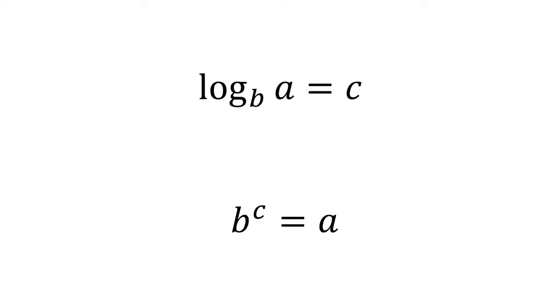A logarithm is a function with two numbers, a and b, which as a result will give us the exponent necessary so that b, to the power of that exponent, will give us a as a result. Number b is called the base of the logarithm.